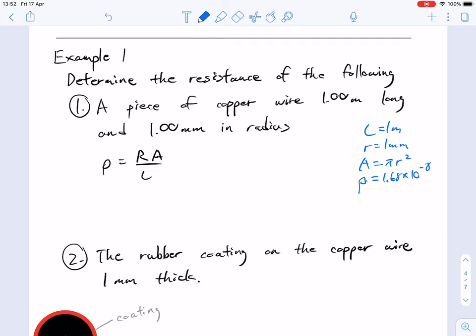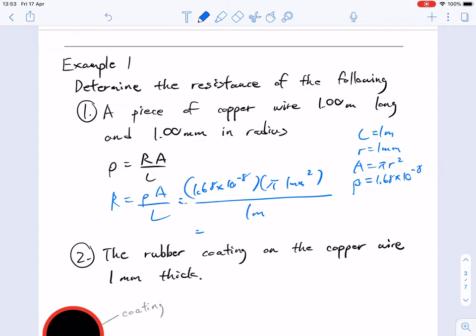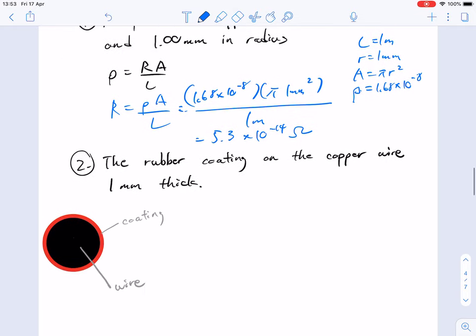We're solving for resistance. Let's rearrange the formula and substitute. R equals rho L over A, where A is pi r squared. I'll grab my calculator. We're expecting a low number because this is a good conductor. 1.68 times 10 to the minus 8, times pi, times radius squared. We get about 5.3 times 10 to the minus 14 ohms. That seems right.